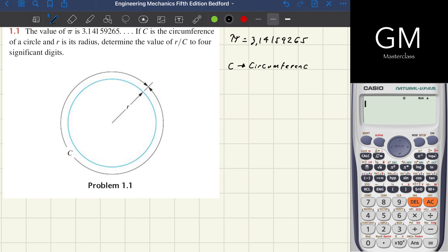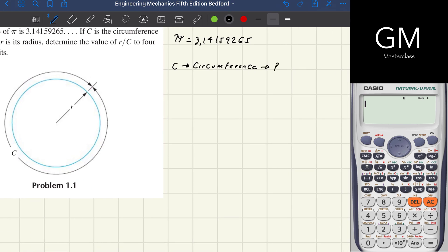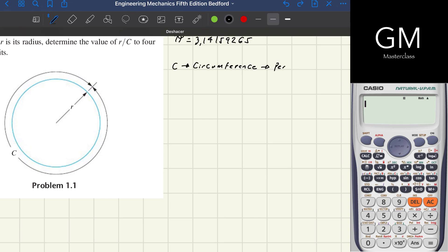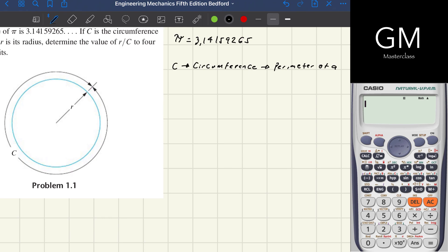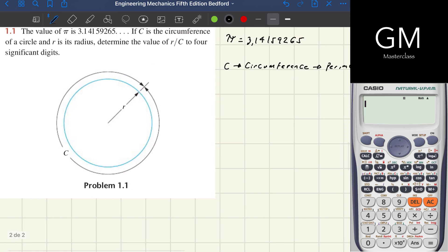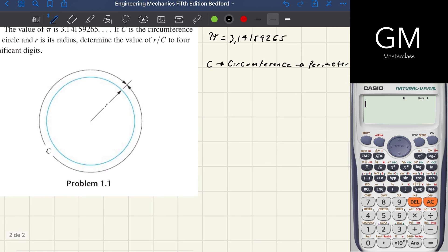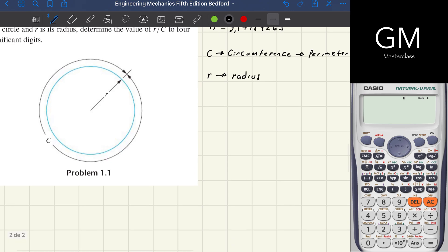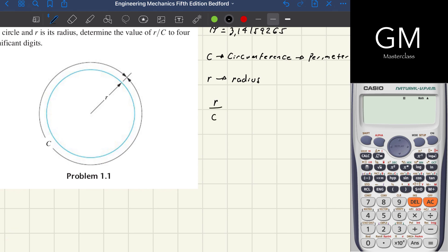C is equal to the circumference, which is the same thing as the perimeter of a circle. R is its radius, and we need to determine the value of R divided by C.